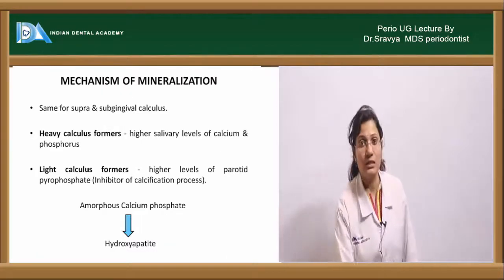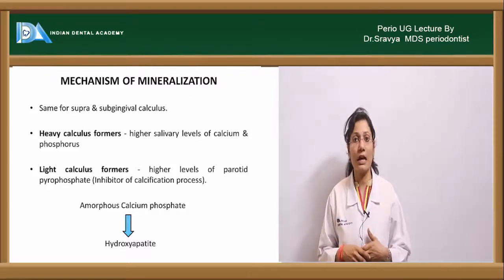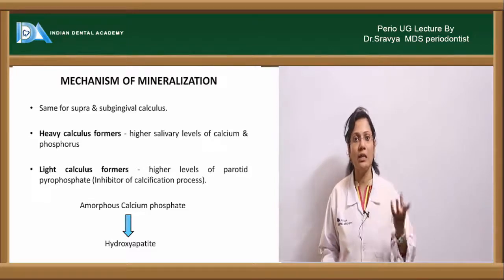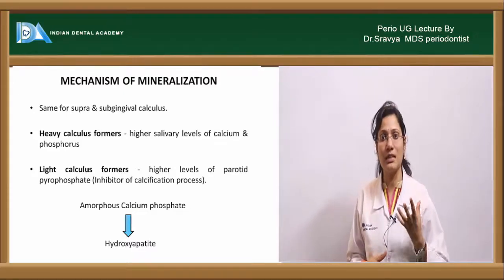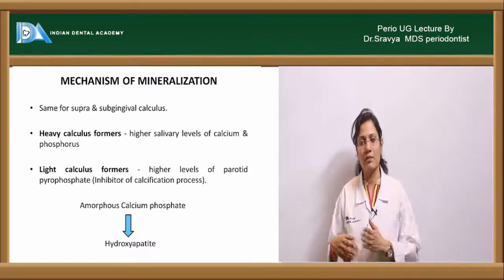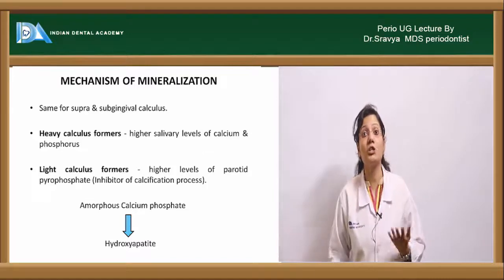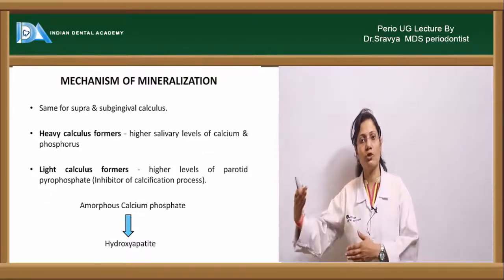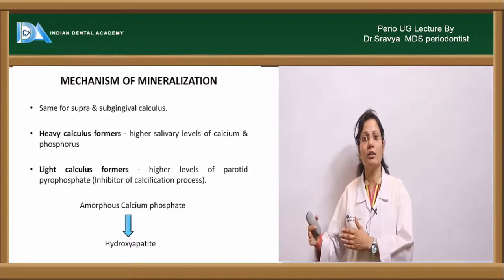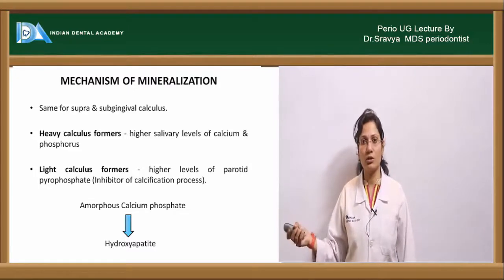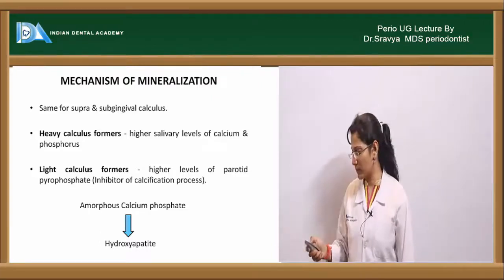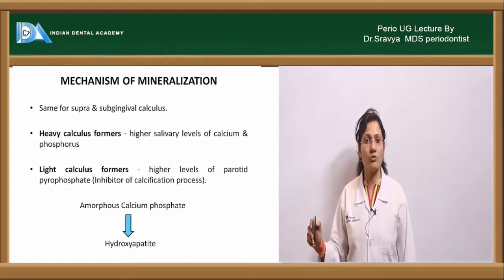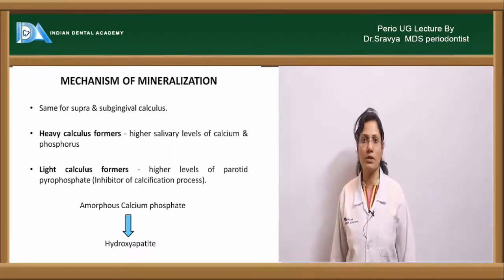Certain individuals are heavy calculus formers while others are light calculus formers. Heavy formers have higher calcium and phosphate levels, while light formers have more inhibitors of calculus formation — specifically pyrophosphates. More pyrophosphates inhibit calculus formation. This technology has been incorporated into toothpaste to decrease calculus formation. Calculus initially forms as amorphous calcium phosphate, which then converts to crystal forms: hydroxyapatite, whitlockite, brushite, and octacalcium phosphate.